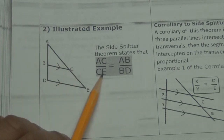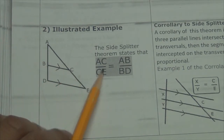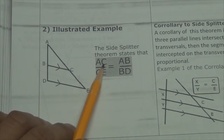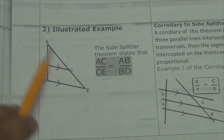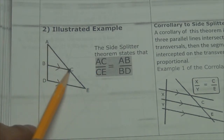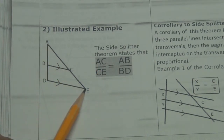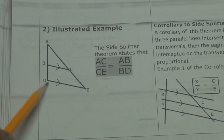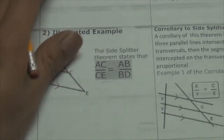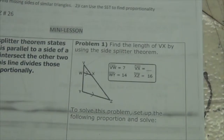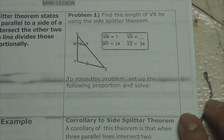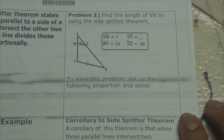So this over this, and this over this — that's basically what you have. AC is to CE as AB is to BD. Alright, so let us actually work one problem out and see how it goes.